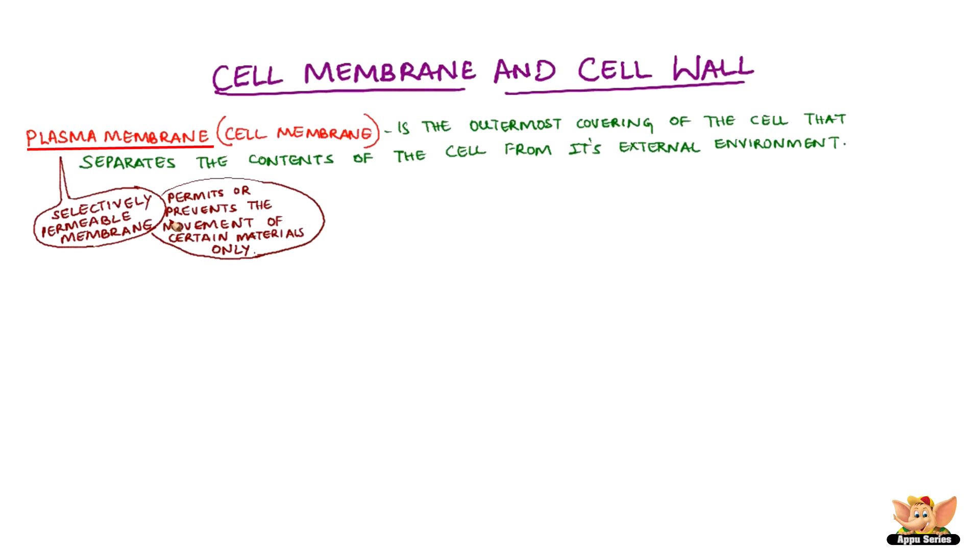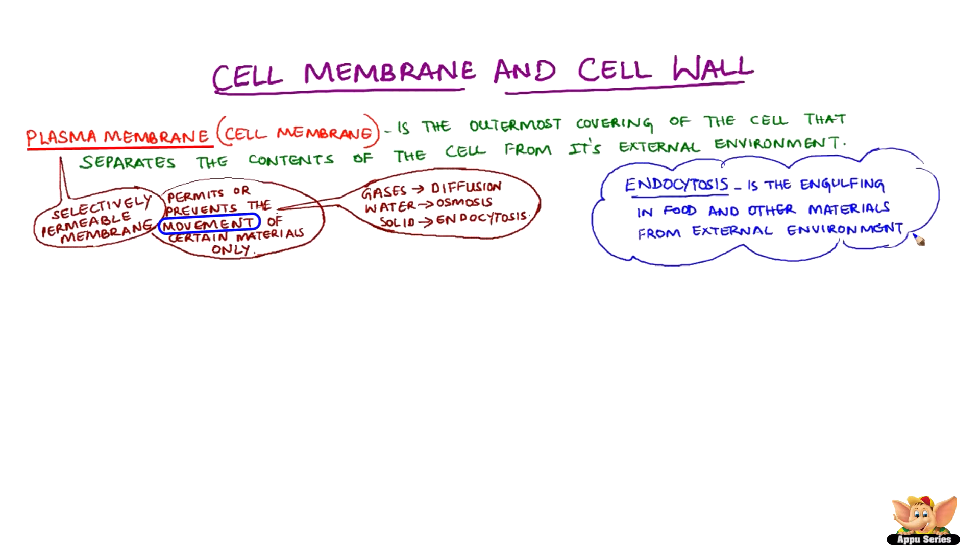So how does this movement happen? Movement of gases is by diffusion, movement of water by osmosis, and movement of solid materials by endocytosis. Endocytosis is the engulfing of food and other materials from external environment. Amoeba acquires its food through endocytosis.